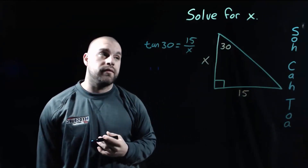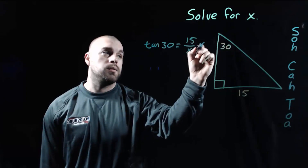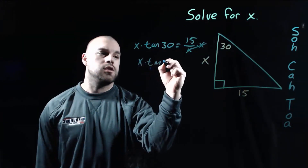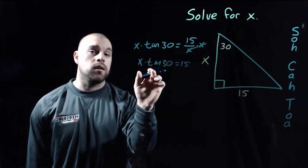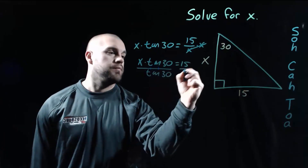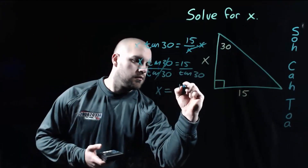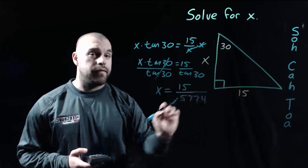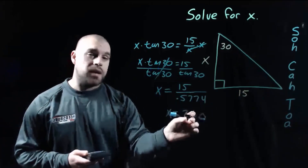This one's a little different. In order to start solving, we have to multiply both sides by X because we're dividing by X. But X still isn't all by itself — now the equation says X times the tangent of 30 equals 15. So we divide both sides by the tangent of 30. In my calculator, tangent of 30 is 0.5774. So we get 15 divided by 0.5774, and rounding to one decimal, we end up getting 26.0.